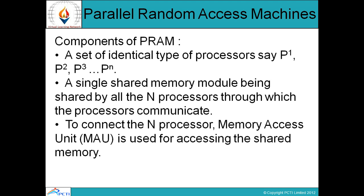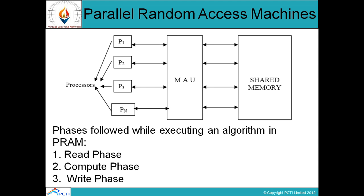In the diagram, all components are shown: processors P1, P2, P3 through PN, a shared memory, and the shared memory connected to the processors through the MAU — that is, memory access unit. There are three phases followed while executing an algorithm in PRAM: first, the read phase where processors read values; second, the compute phase where those values are processed; and third, the write phase where the result is written back to memory.